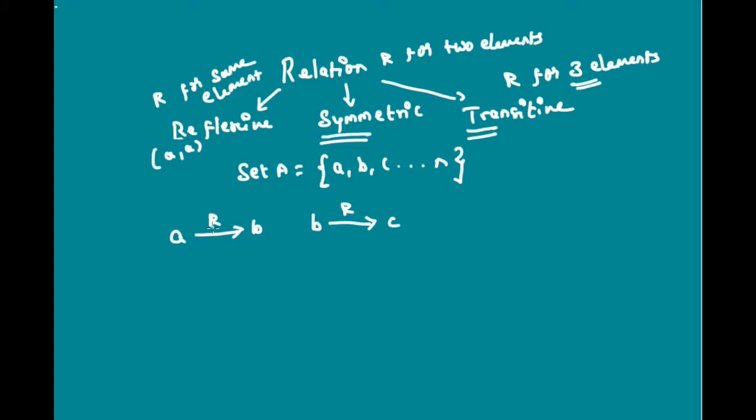We are assuming that R is true for A and B, and R is true for B and C. If that be the case and if the same R is true for A and C, then this relationship is known to be transitive.